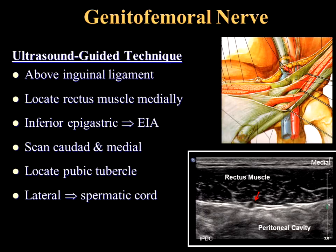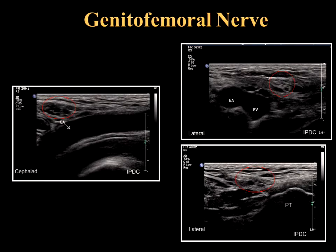Another technique: scan above the inguinal ligament, locate the rectus muscle medially, find the inferior epigastric artery, and trace it laterally and caudad as it dives into the external iliac artery. Once you find the external iliac artery, scan slightly medially to see the spermatic cord crossing over. You can also scan down to the pubic tubercle and look for the spermatic cord just lateral to it. In long axis you can see the external iliac artery with the spermatic cord right above, and the pampiniform plexus. In transverse axis you see the external iliac artery, external iliac vein, and the spermatic cord, and you inject both in and outside the spermatic cord.